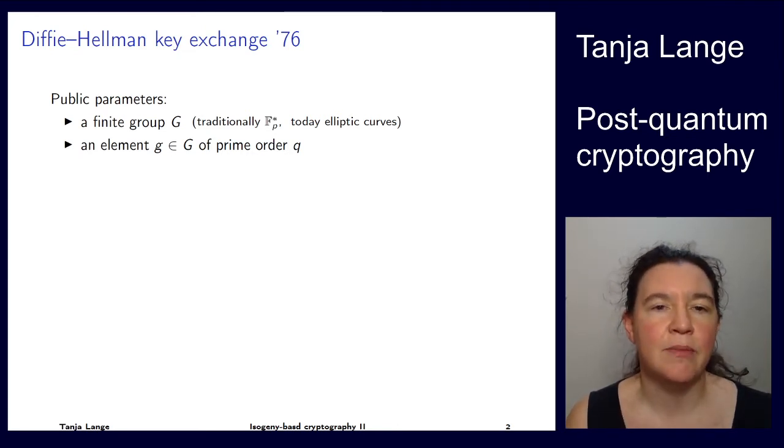And you need to have some element g of G with a known prime order. So G is seen as a generator of a subgroup, and that has this prime order Q. And with that, you can do what's called the Diffie-Hellman key exchange.